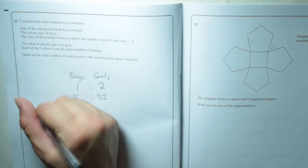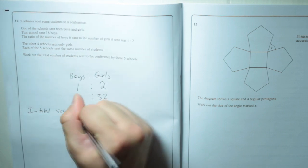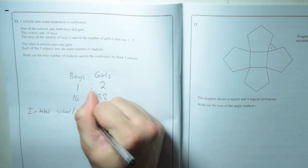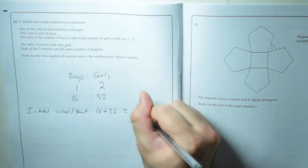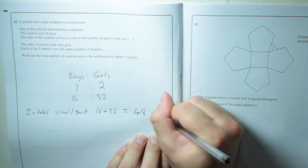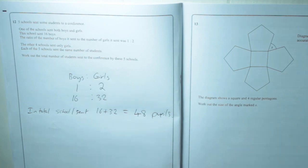So in total, school one sent 16 plus 32, which is 48 pupils. That's school one, so that means all five schools sent 48 pupils.